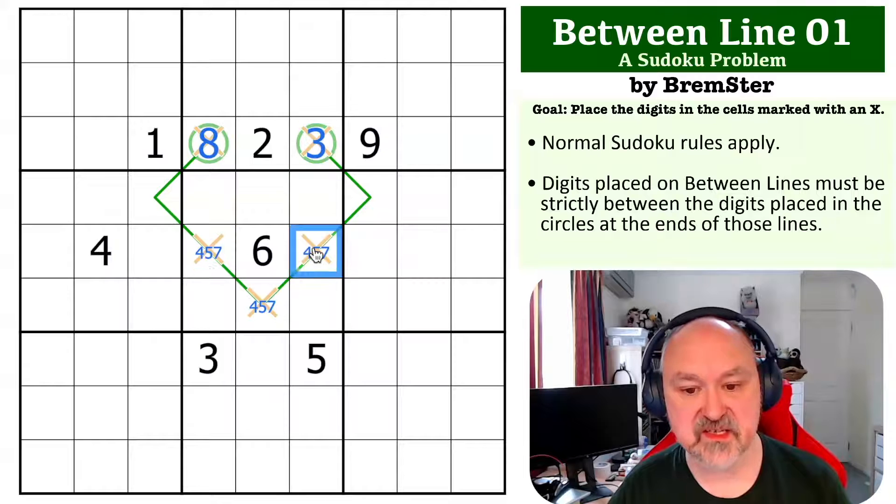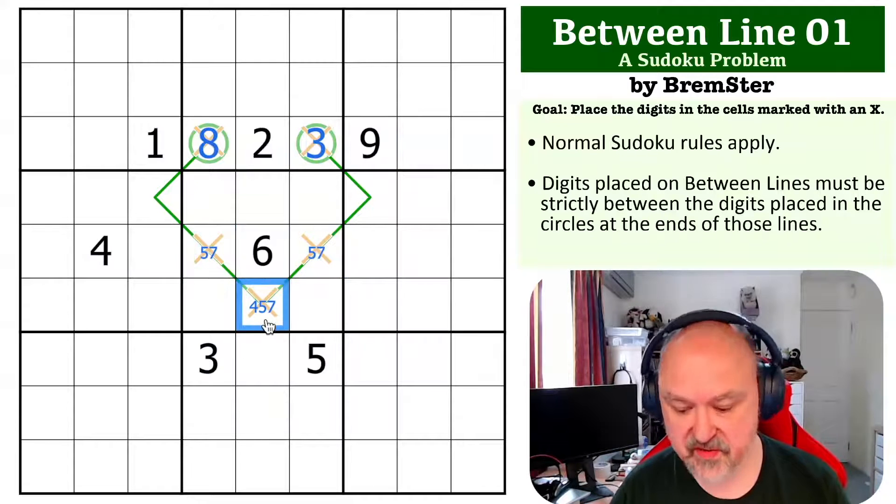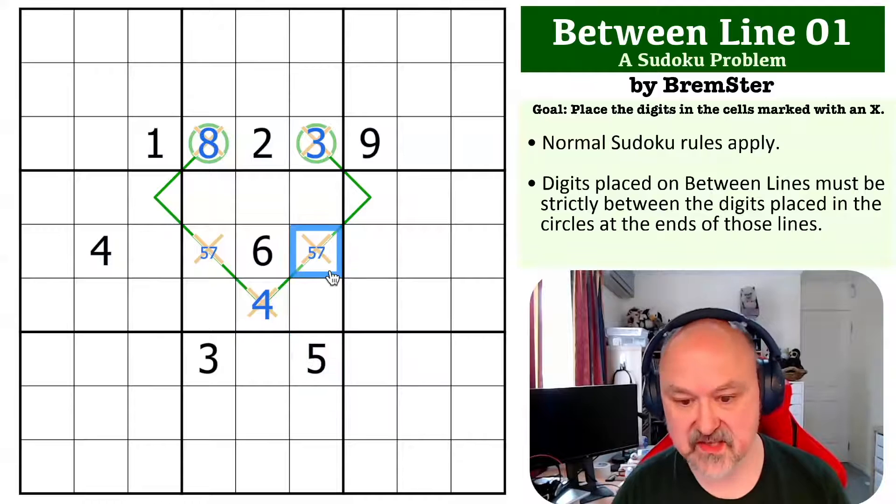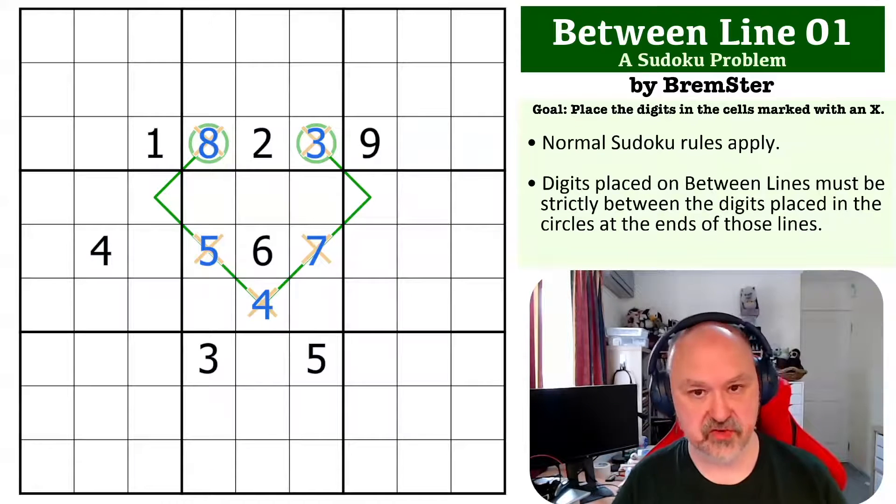Now, because this is four, five, and seven, we can't put four in those. So that becomes the four. The five means that this is the seven and this is the five, and that is the solution to the problem.